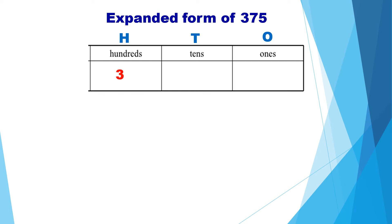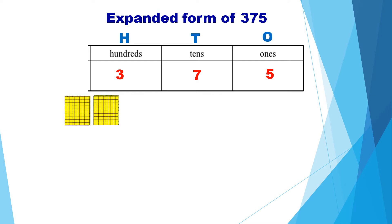Three hundreds, seven tens, and five ones. Let us see how to represent this using the tens blocks. Three hundreds means we will be taking 300 blocks — one, two, three — meaning the value is 300.